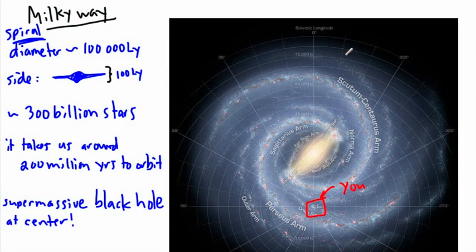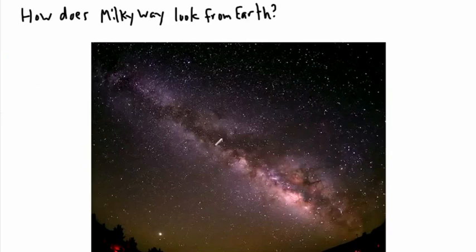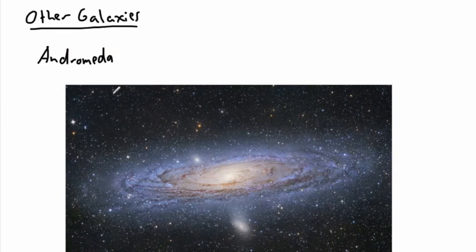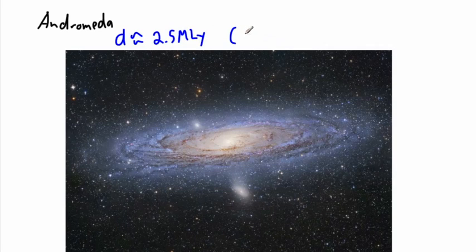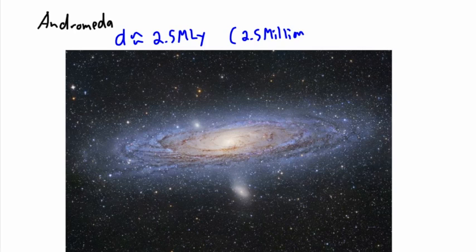Before we were looking at our own galaxy, the Milky Way, and we saw that from the top view it looks like this. What we actually see is something like this, and it's a form of spiral galaxy. But let's take a look at some other galaxies. This one here is called the Andromeda Galaxy, which looks really cool. This is a spiral galaxy, and it has a distance of around 2.5 mega light years, which means it's around 2.5 million light years away. So it takes light from this galaxy around 2.5 million years to get here, which is really crazy.